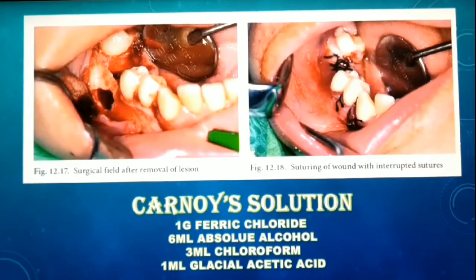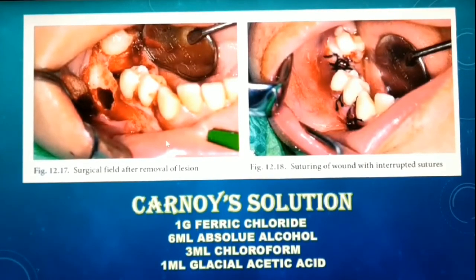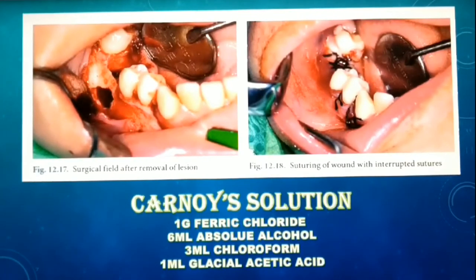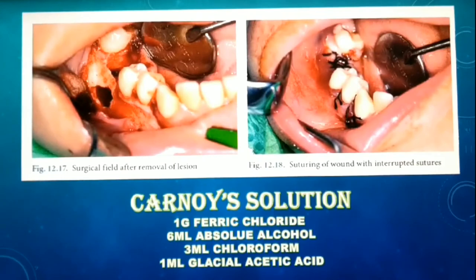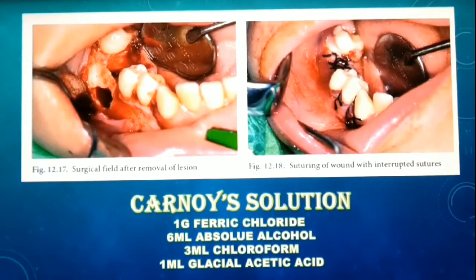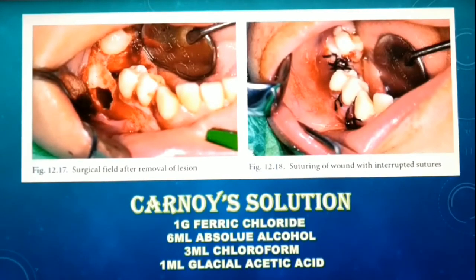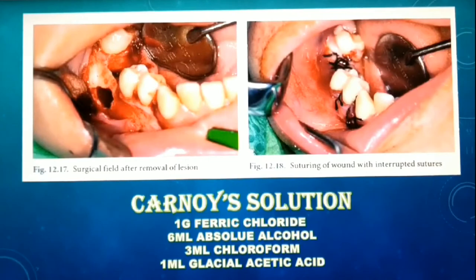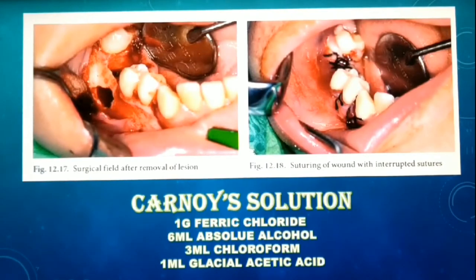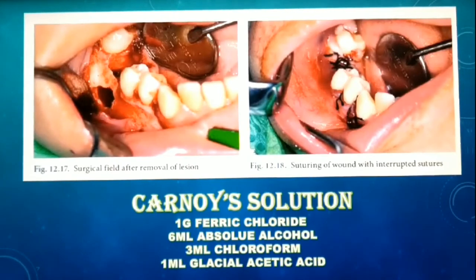During enucleation of aggressive cysts like odontogenic keratocyst, it is advisable to perform chemical cauterization. It can be done with Carnoy's solution, which is a powerful fixative and has been found to reduce the percentage of recurrence. Carnoy's solution is applied on the cavity walls only — it should not spill onto the soft tissues around. Apply the solution on the walls for about three minutes using a small cotton ball. The cavity is then cleansed again and closed in layers.